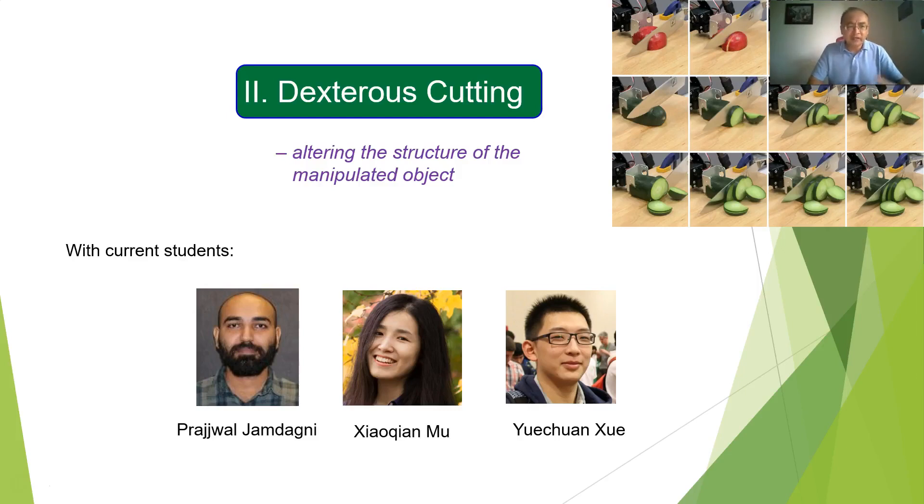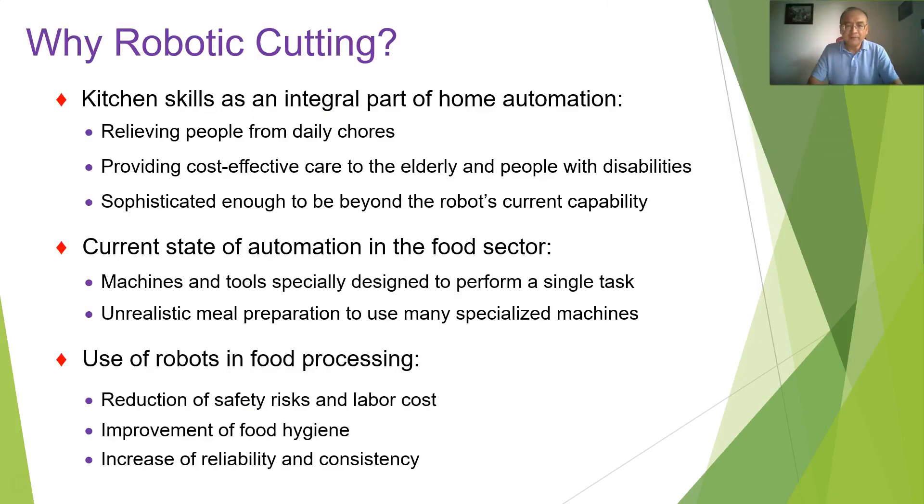Now we move on to dextrous cutting. This is the work done with the current students Prajwal Jamdagni and Xiao Qian Mu and Yue Chuan Xue. So why robotic cutting? Well it's because we really wanted to look into automation of kitchen skills. This is the integral part of the home automation. So far robots have been used in those peripheral tasks such as washing and sorting discs and cleaning floors in the kitchen. But what we really want is to have a robot master these sophisticated cutting skills. This could relieve people from the daily chores and reduce the cost of health care especially for the elderly and people with disabilities.